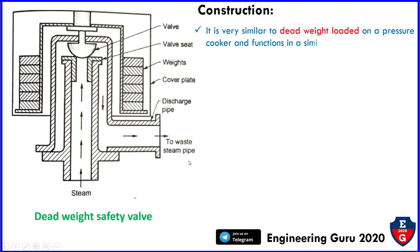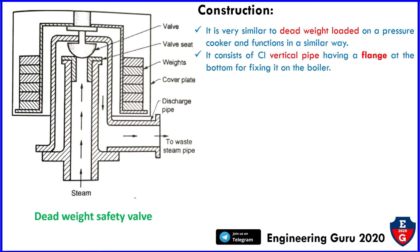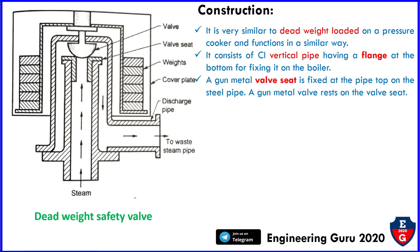Starting with construction — it is very similar to a dead weight loaded on a pressure cooker and functions in a similar way. It consists of a cast vertical pipe having a flange at the bottom for fixing it on the boiler. A gun metal valve seat is fixed at the top of the pipe. On the steel pipe, a gun metal valve rests on the valve seat. In this figure we can see the valve and the valve seat. The valve is fastened to the weight carrier.